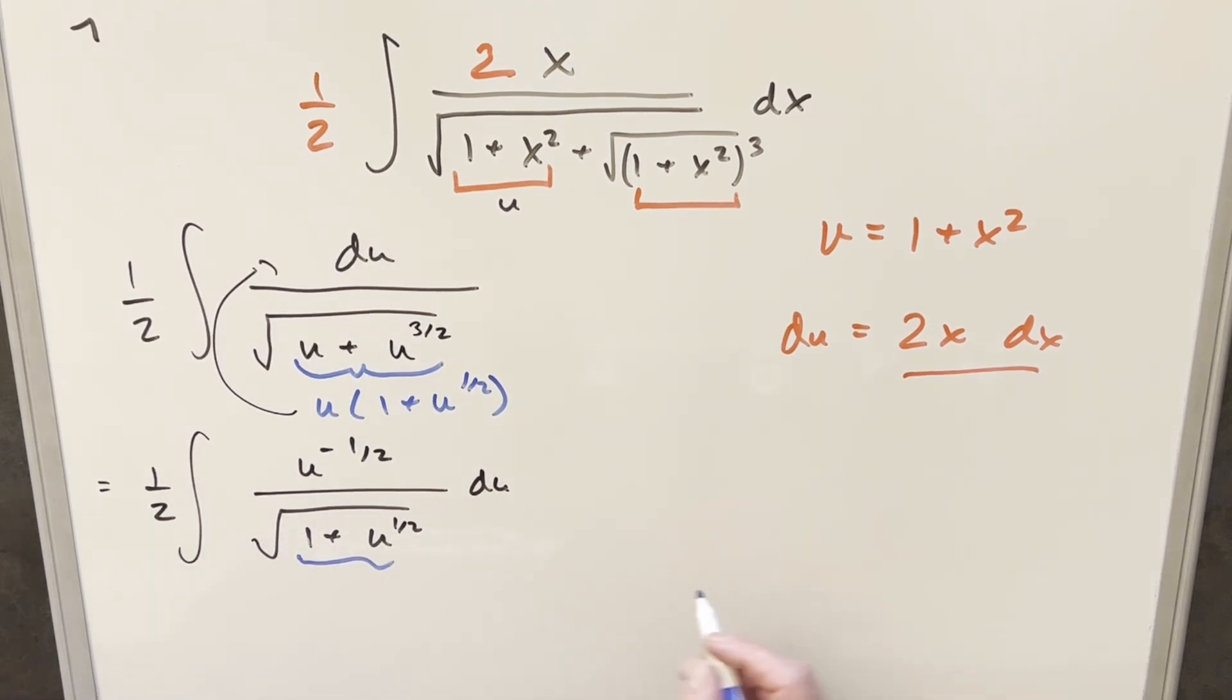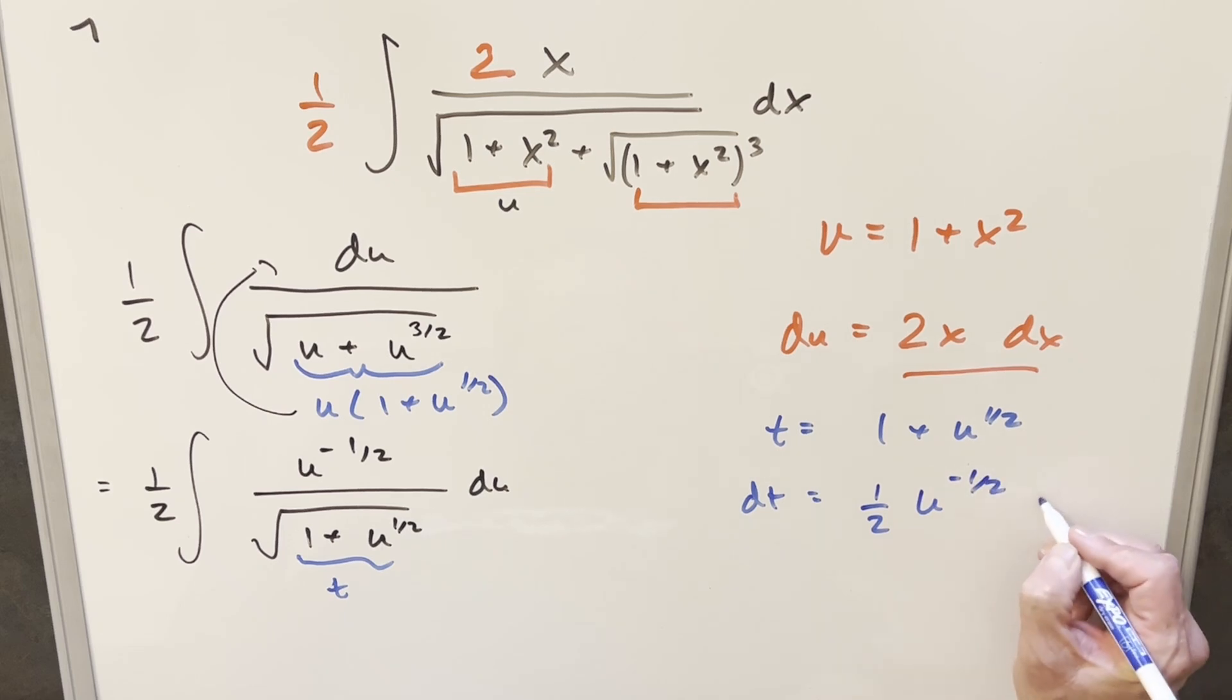Let's call this piece right here t. So we'll say t is going to be 1 plus u to the 1 half. Take a derivative on this to get a dt value. Derivative here, 1 half u to the minus 1 half du.